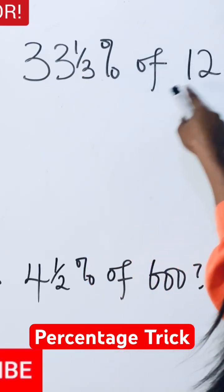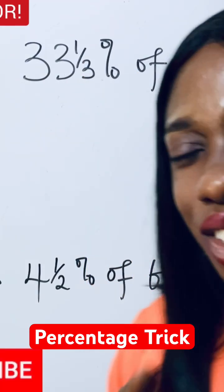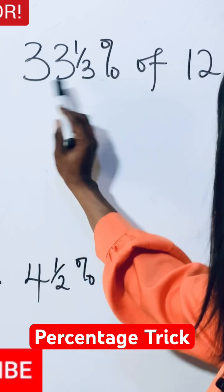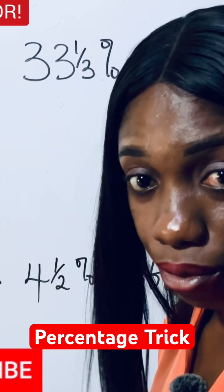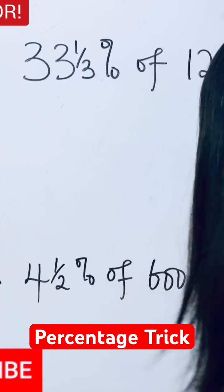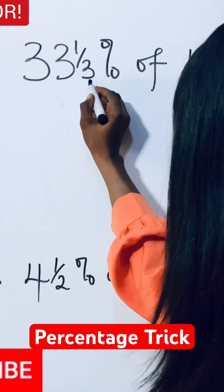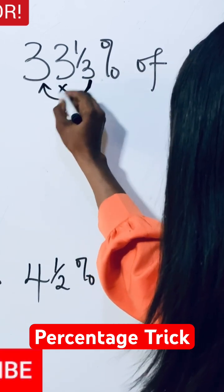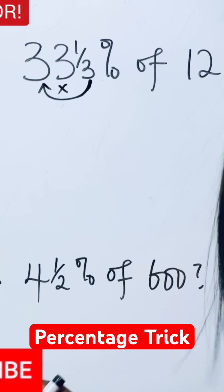33 and one third percent of 12. It's very simple. What you do is convert this to an improper fraction. In that case, multiply this 3 with 33. When you multiply it, it gives you 99.